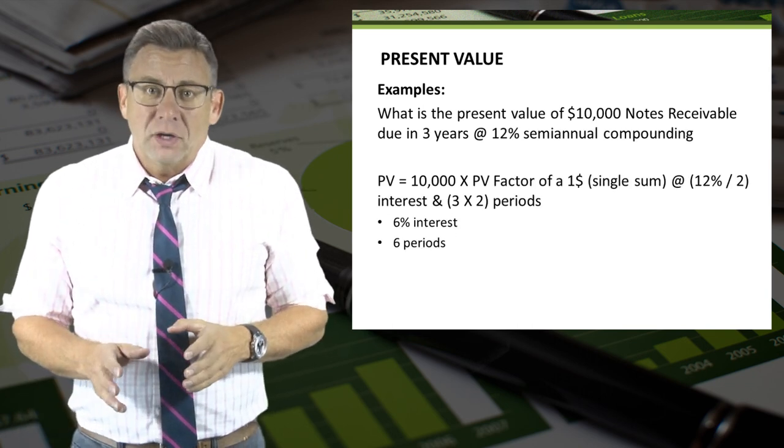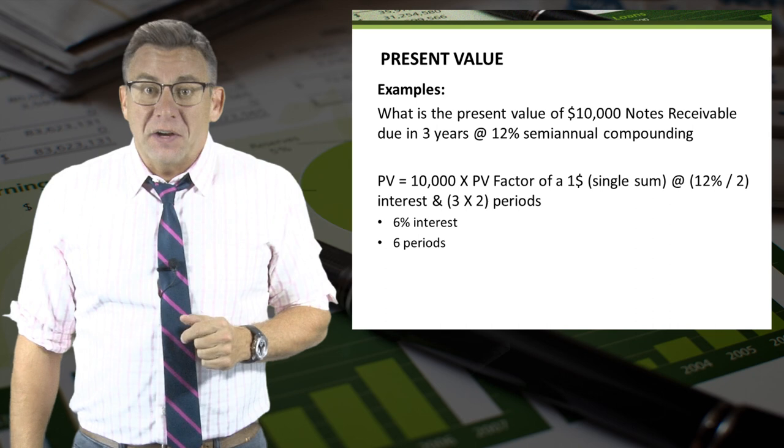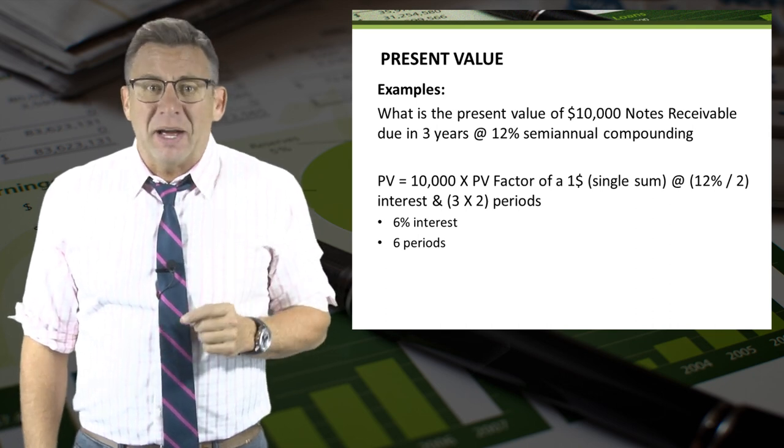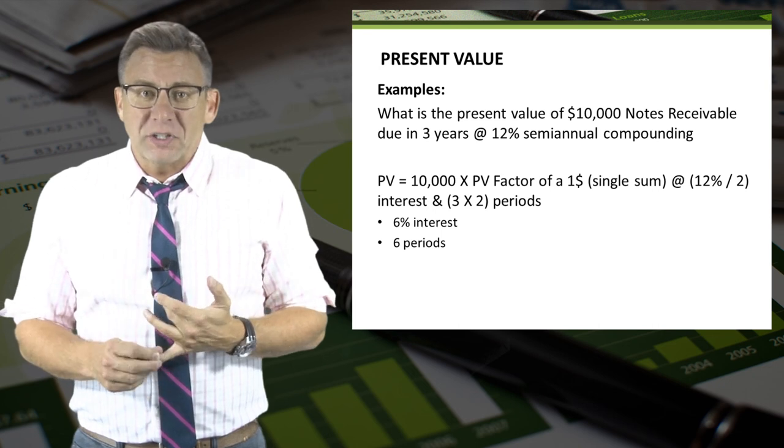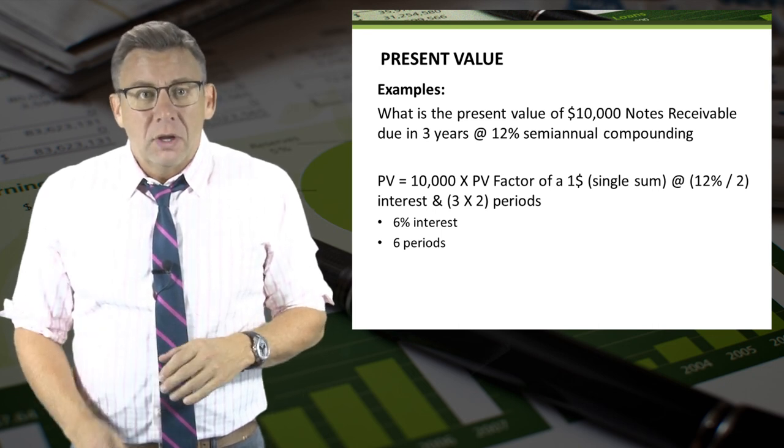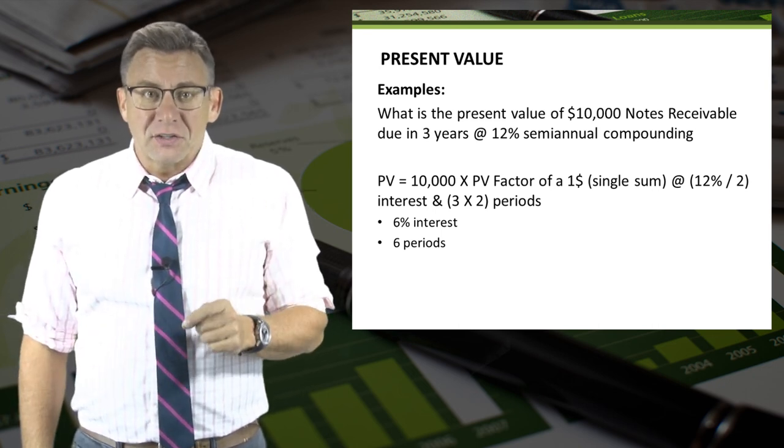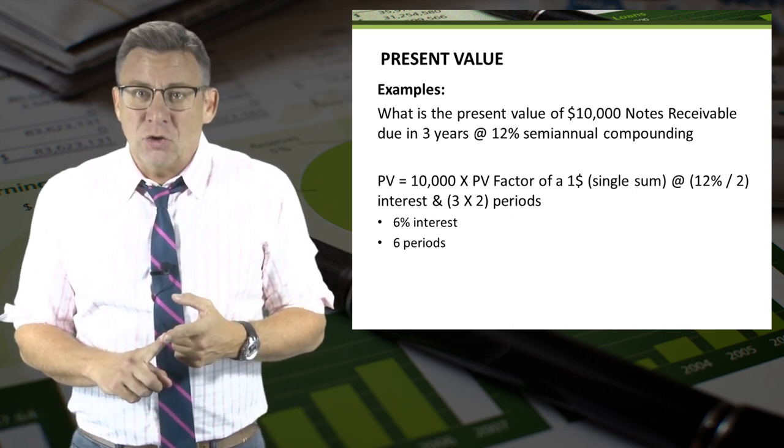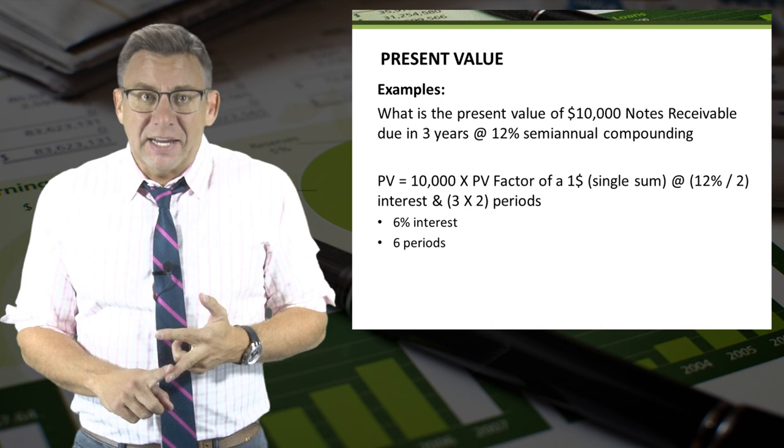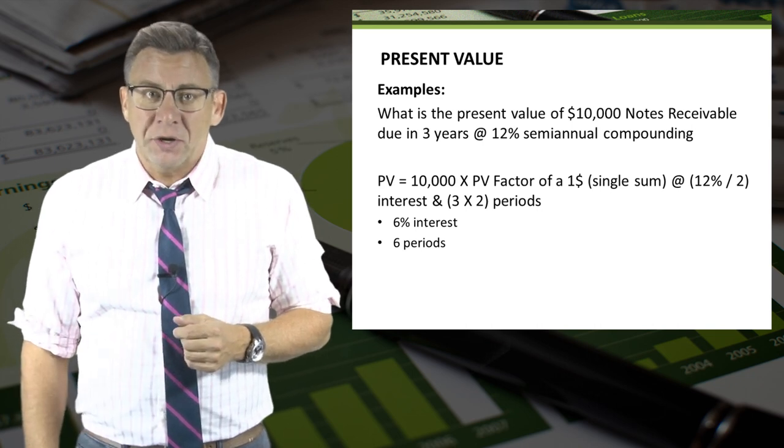For this next scenario, I need to convert the interest and the number of periods to match the semiannual compounding. So I divide the 12% interest rate by 2 and multiply the three years times 2 to get 6% semiannual interest and 6 semiannual interest periods.